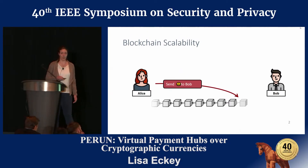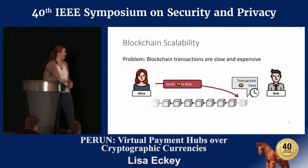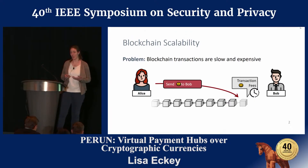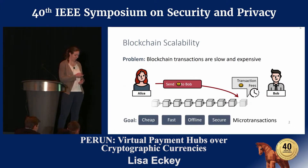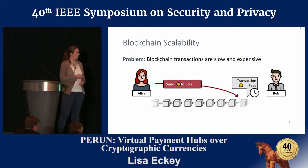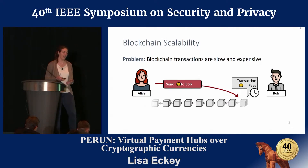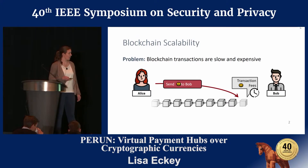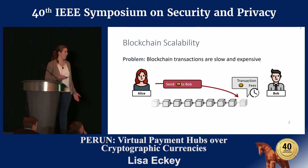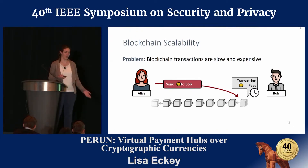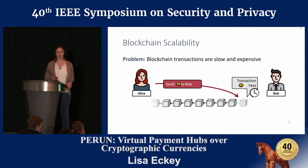The good thing about this technology is that it allows payments without a central intermediary like a bank. But the problem is that it's not quite as convenient as we'd like. Whenever the decentralized network has to create a new block, this takes quite some time — it might take minutes or even hours until Bob knows the transaction is confirmed. On top of this, the network wants to be paid, so there are transaction fees for every transaction. This is a problem especially for very small payments.